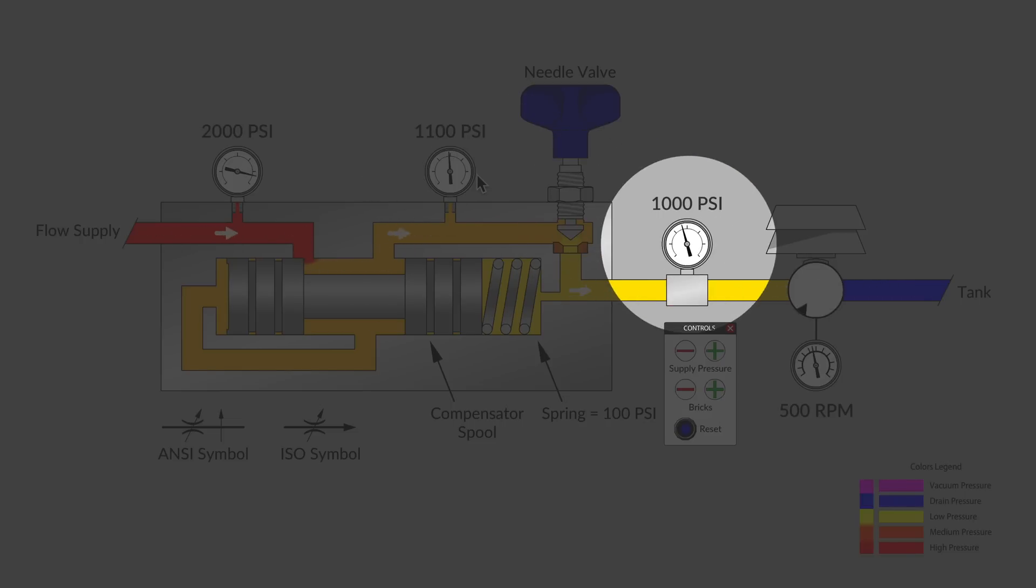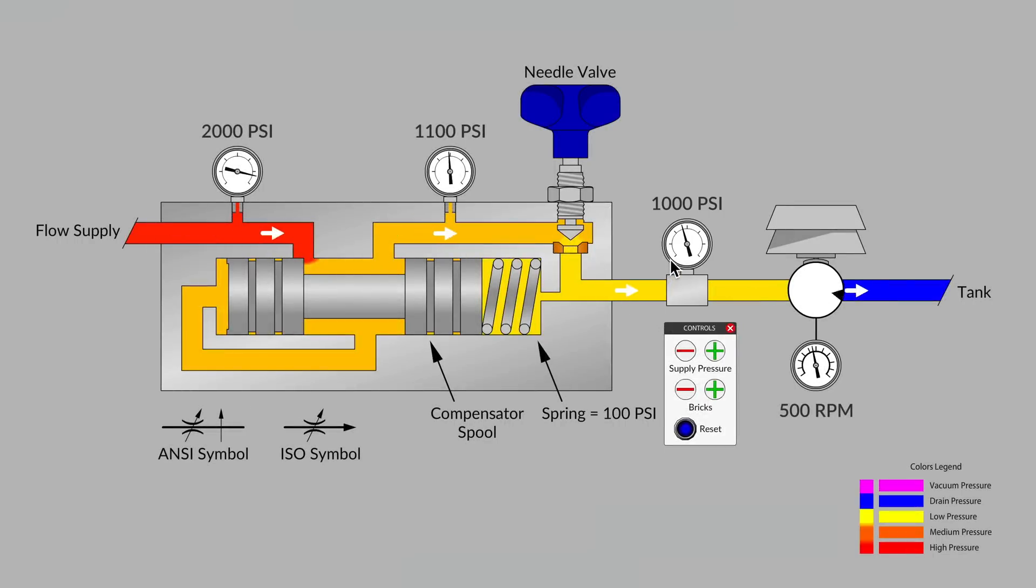And we noticed that that consistent delta P, that automatic setting of 100 higher, is what gave us a very consistent flow rate through the needle valve and helped us lock in our RPMs, which was our objective.